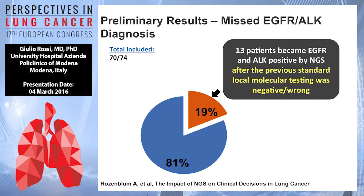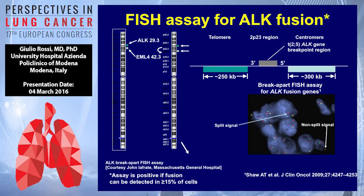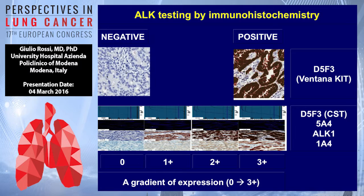For ALK, FISH is the gold standard. We have to use a break-apart probe to determine if there is an inversion or a deletion. But now we have immunohistochemistry that is quite performant to detect ALK positivity. The D5F3 from Ventana kit is very performant — positive or negative, no score required. But if you use D5F3 from Cell Signaling Technology, 5A4, ALK1, or 1A4, you have to use a scoring system because you have different intensities of expression in the tumor.